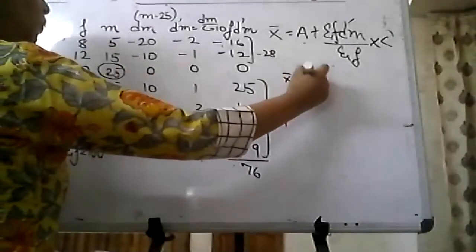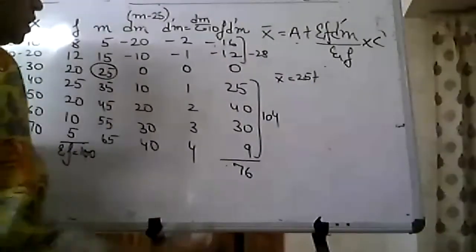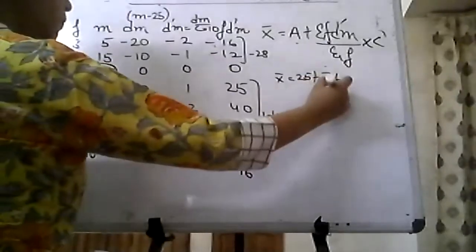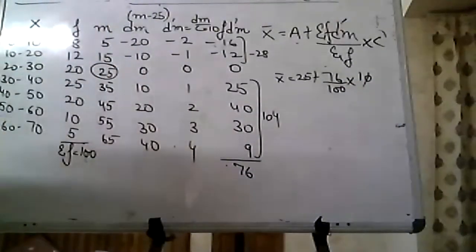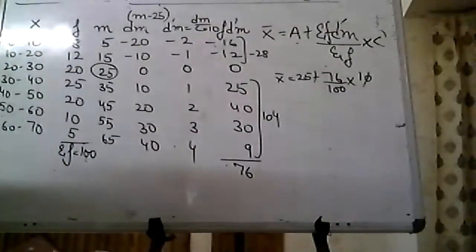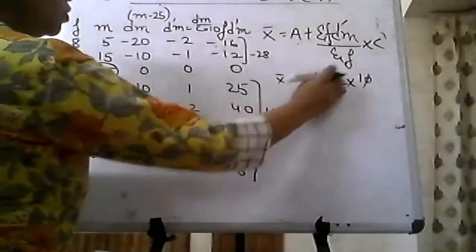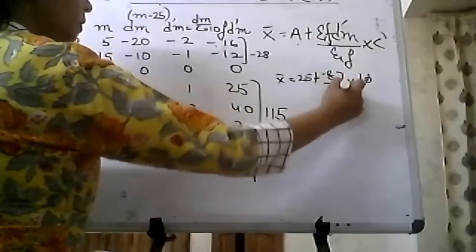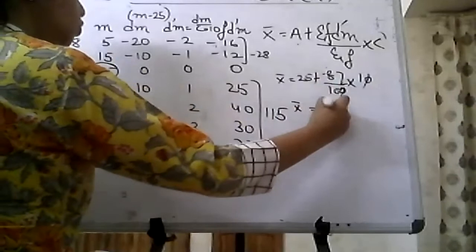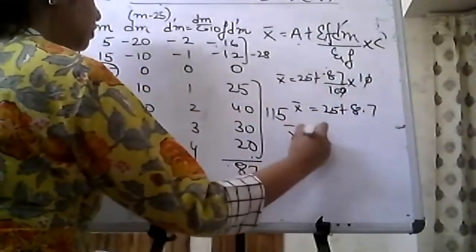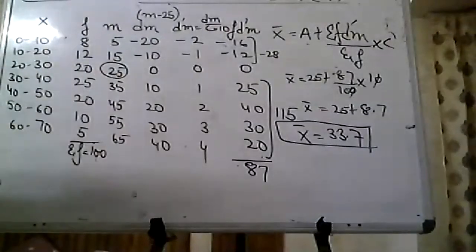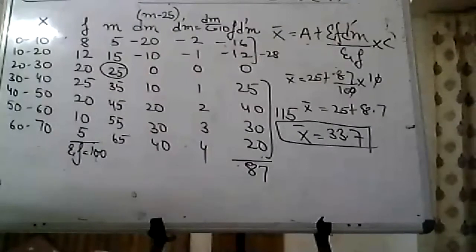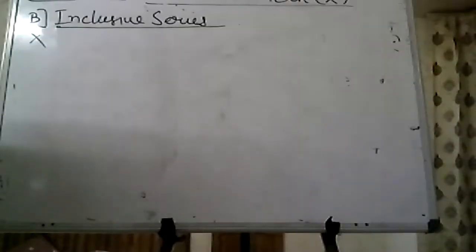Let's put the values in the formula. I have taken assumed mean to be 25. Σfd'm is 87 over 100 into 10. Wait, some calculation mistake. Σfd'm is 87. Zeros cancel. x̄ = 25 + 8.7. x̄ = 33.7. So we have seen that any method you make use of, you will get the same answer.